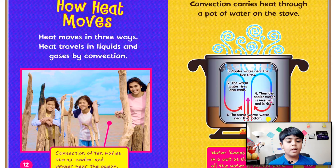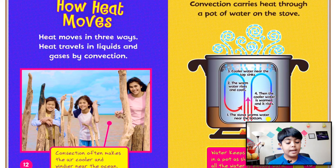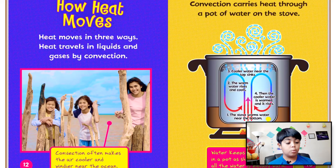Chapter three: How heat moves. Heat moves in three ways. It travels through liquids and gases by convection. Convection often makes the air cooler and windier near the ocean. Convection carries heat through a pot of water on the stove. First, the stove warms the water near the bottom. Then the warm water rises and cools. Third, the cool water near the top sinks.